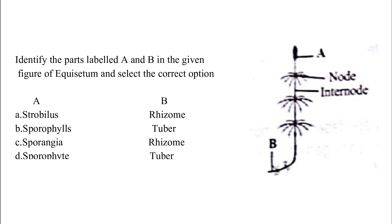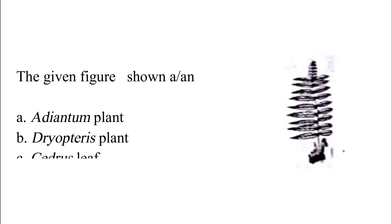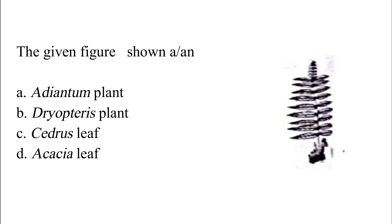Identify the parts labeled A and B in the given figure of Equisetum and select the correct option. Option A: strobilus and rhizome. Option B: sporophylls and tuber. Option C: sporangia and rhizome. Option D: sporophyte and tuber. The correct answer is Option A — strobilus and rhizome.